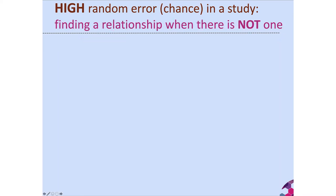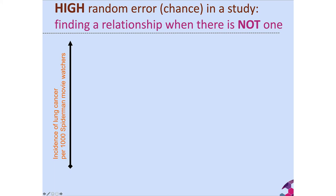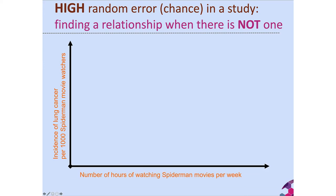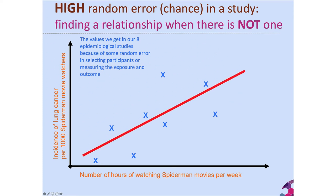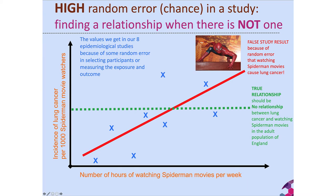The other problem with high levels of random error is finding a relationship when there is not one. For example, looking at lung cancer incidence per thousand Spider-Man movie watchers versus hours of watching Spider-Man movies per week — because of random error in our eight studies we find a relationship suggesting watching Spider-Man movies leads to lung cancer. We know from biology there is no such relationship. This is a false study result — what it should show is a flat line, no relationship between lung cancer and watching Spider-Man movies.